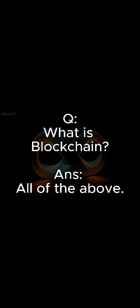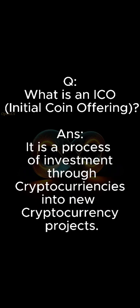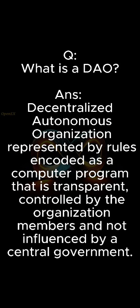What is blockchain? The answer is all of the above. Who should contribute to blockchain? The answer is everyone can. What is an ICO (initial coin offering)? The answer is it is a process of investment through cryptocurrency into new cryptocurrency projects. What is a DAO? The answer is a decentralized autonomous organization represented by rules encoded as a computer program that is transparent and controlled by the organization members, not influenced by a central government.